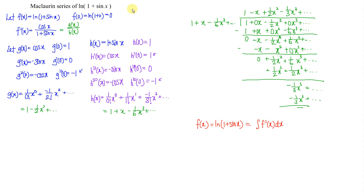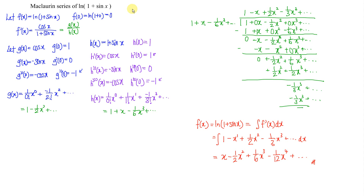So we integrate 1 minus x plus (1/2)x squared minus (1/3)x cubed with respect to x. Integrating 1 gives x. Integrating negative x gives negative x squared over 2. Integrating (1/2)x squared gives (1/2) times x cubed over 3, which is (1/6)x cubed. Integrating negative (1/3)x cubed gives negative (1/3) times x to the power 4 over 4, which is negative (1/12)x to the power 4, and so on. That's all for today — thanks for watching, hope you like this, see you.